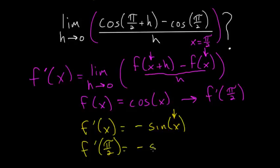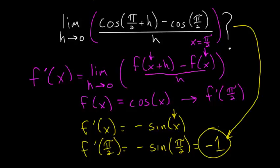So we have minus sine of pi over 2. And the sine function at pi over 2 is equal to 1. So this entire expression up here is simply equal to minus 1.